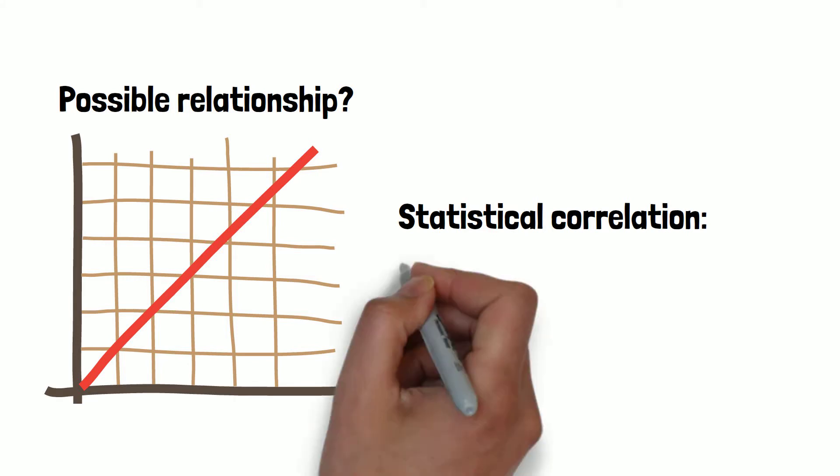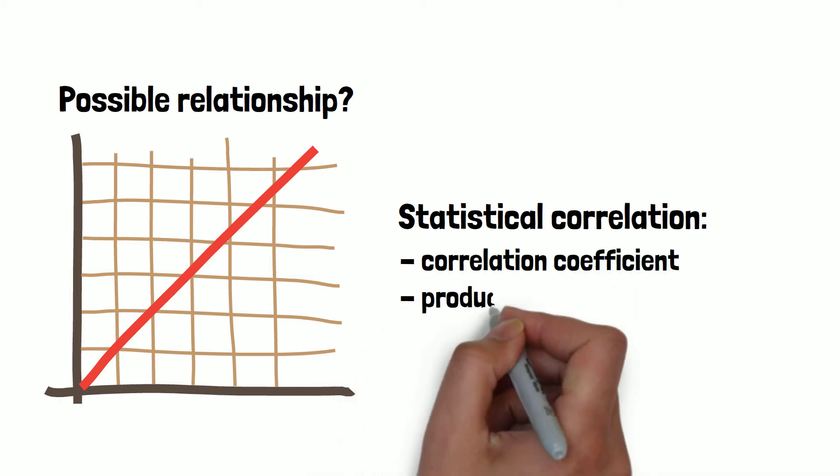A frequently used measurement is the correlation coefficient, also called product-moment correlation.